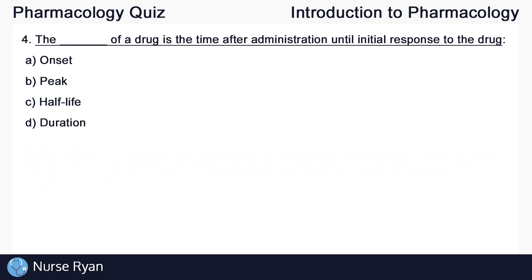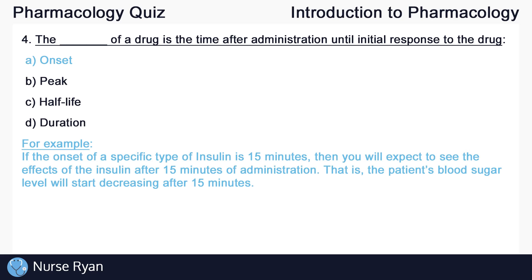Question four: The blank of a drug is the time after administration until initial response to the drug. The answer here is A — onset. For example, if the onset of a specific type of insulin is about 15 minutes, then you will expect to see the effects of the insulin after 15 minutes of administration — that is, the patient's blood sugar level will start going down after 15 minutes. We'll go over the rest of these options in the next questions.